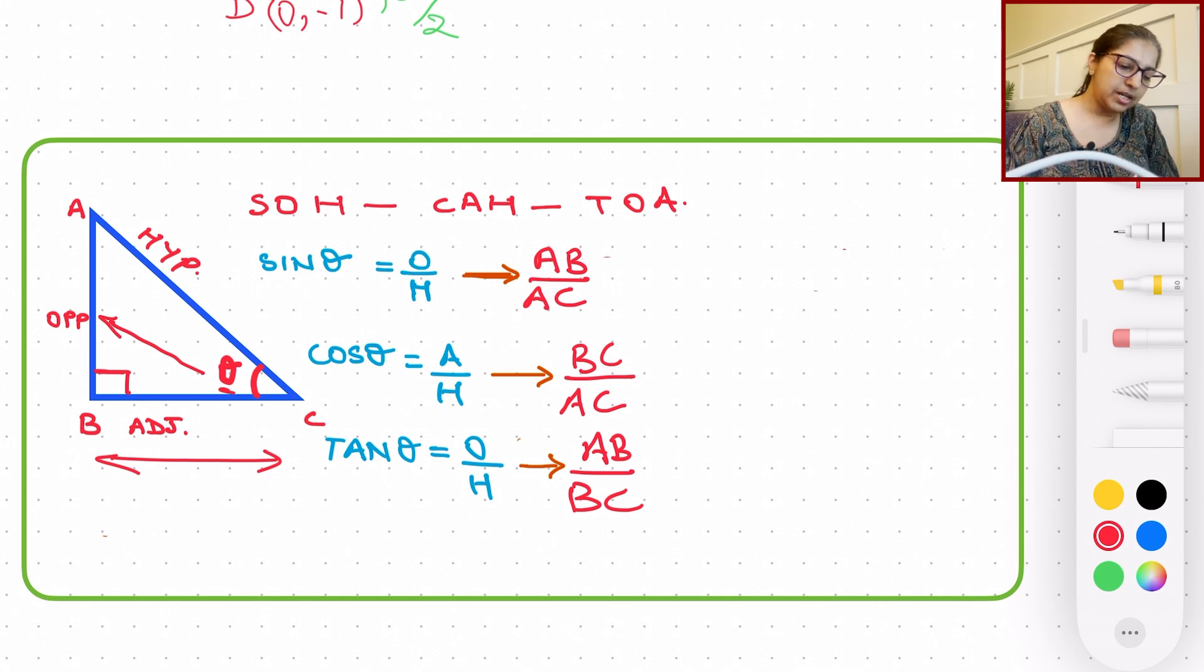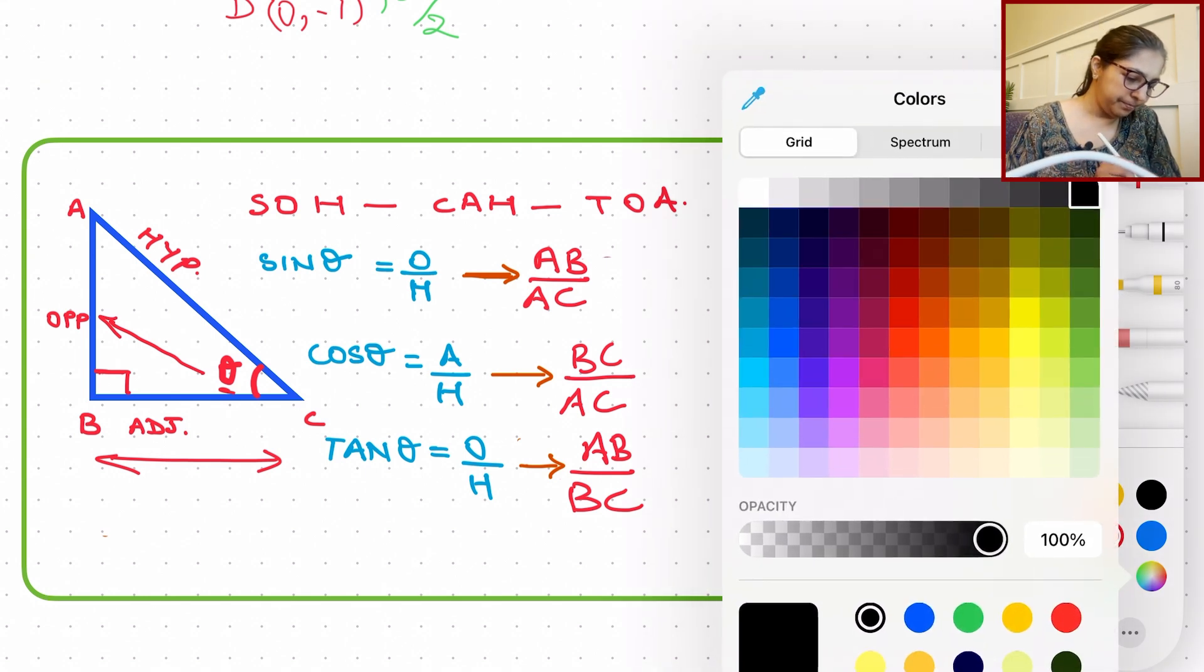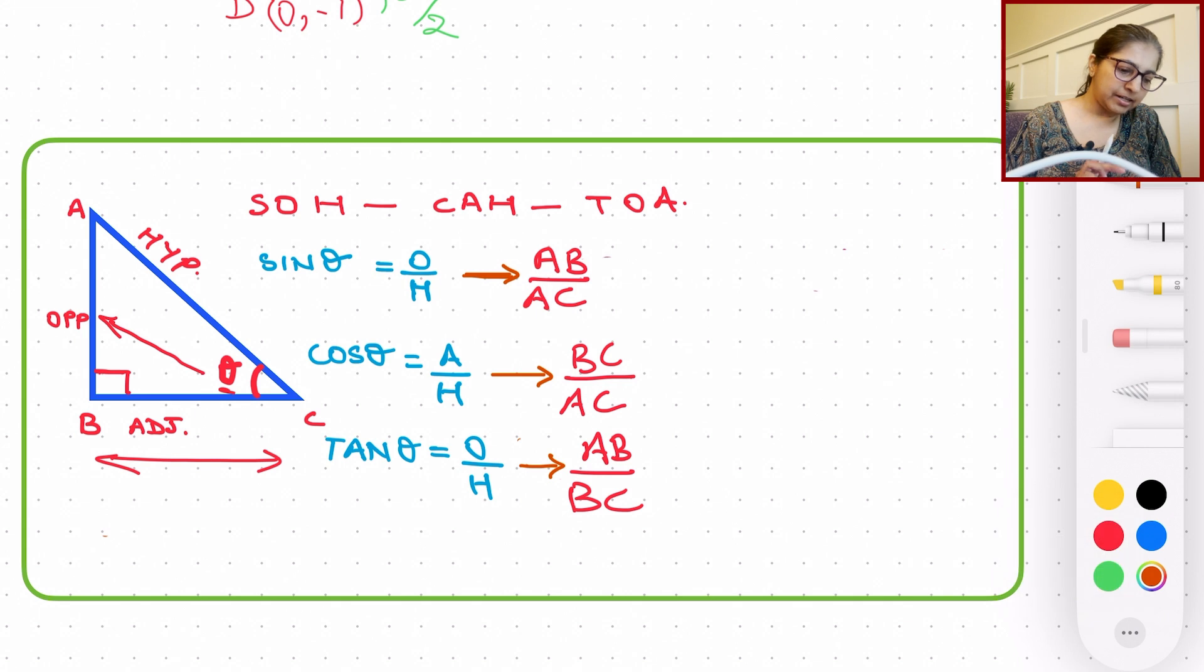Now, how does cosecant, secant, and cotangent apply here? So these ratios are also very simple and they just relate to sine, cosine, and tangent. So basically, our cosecant function,